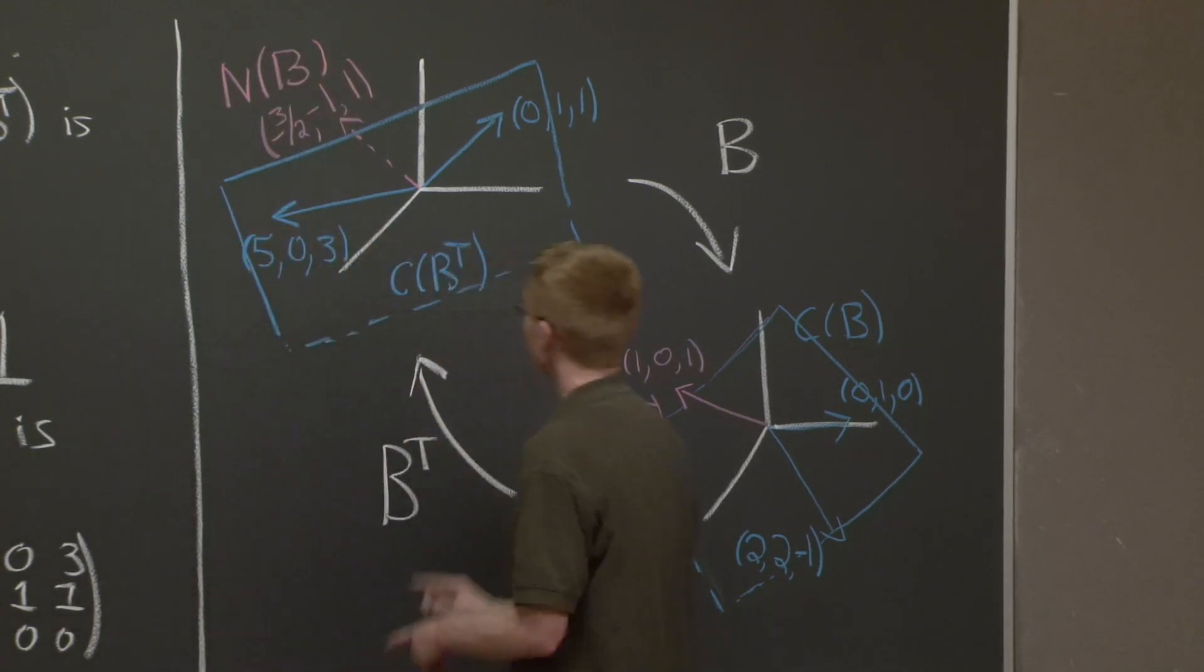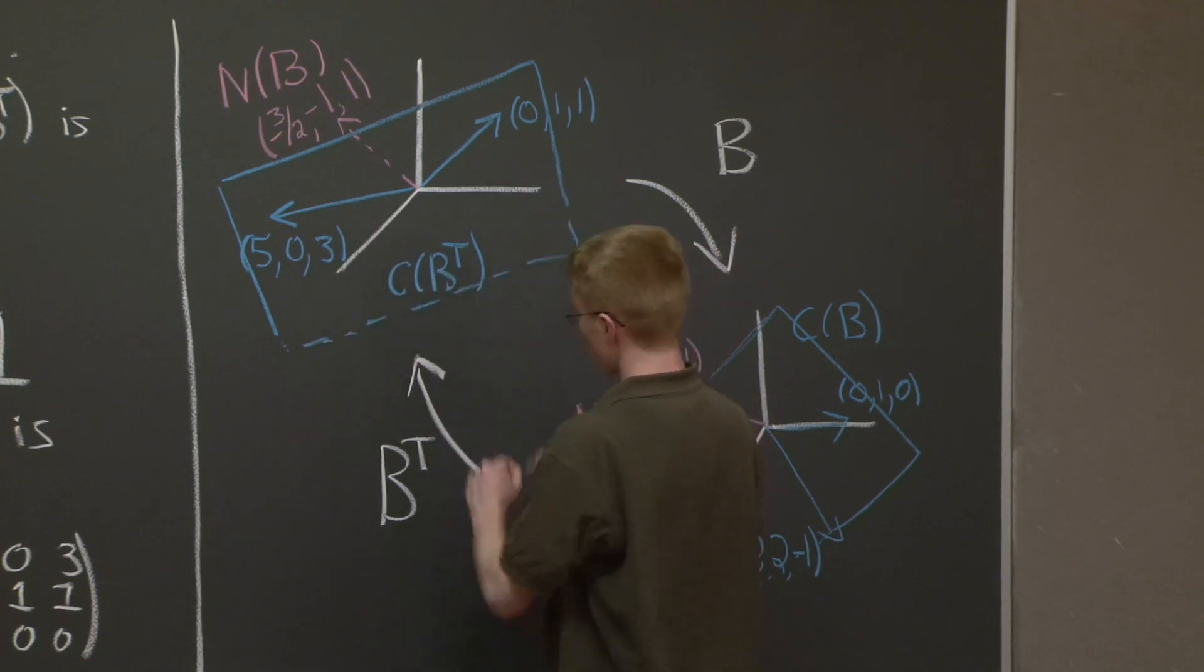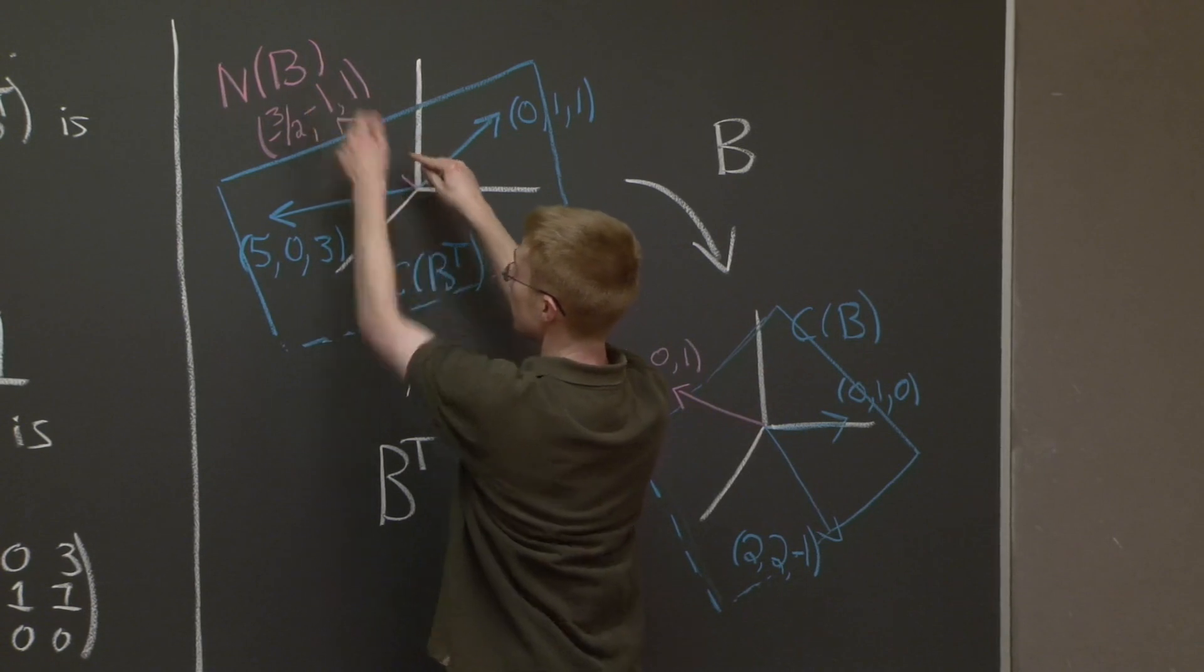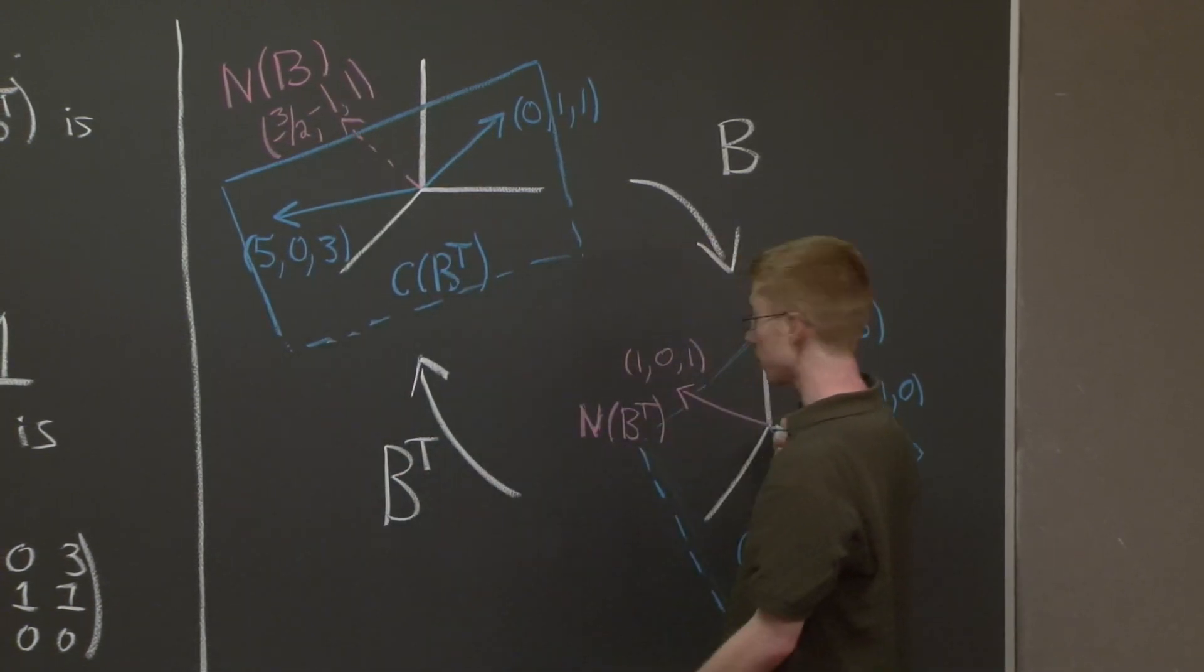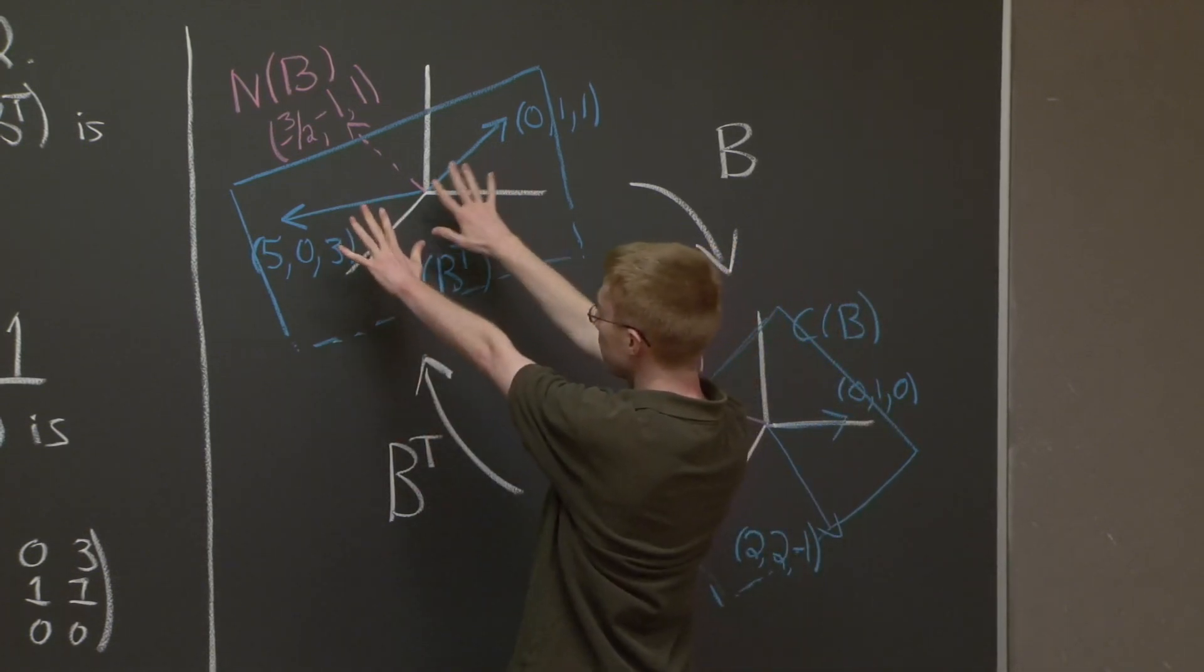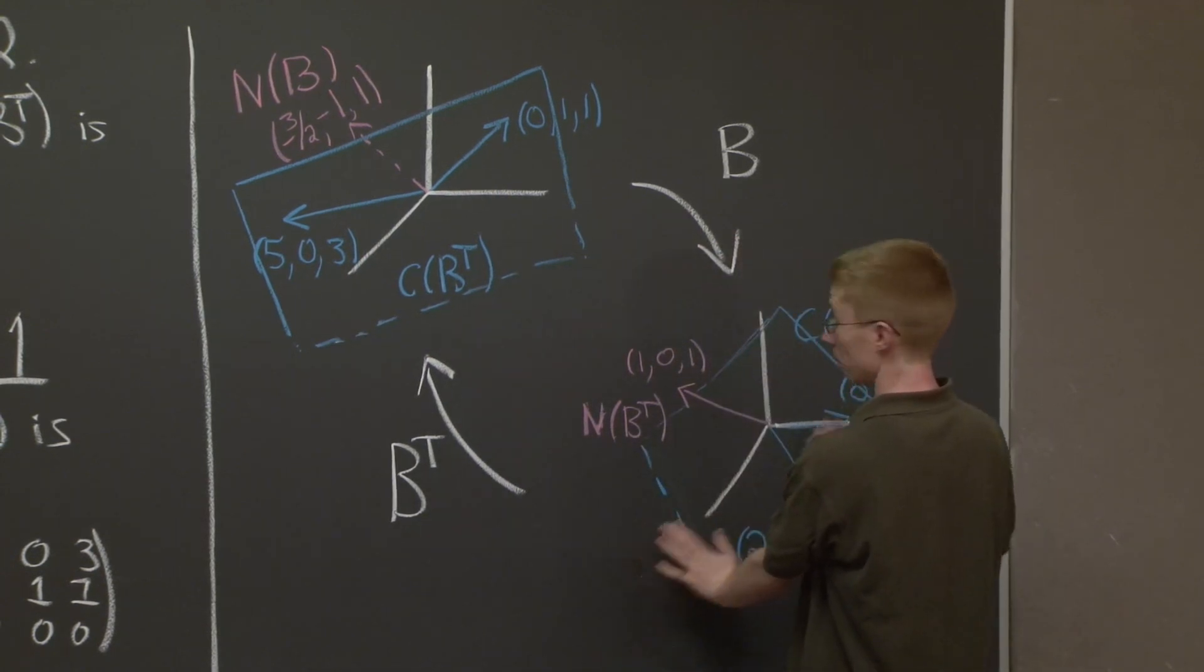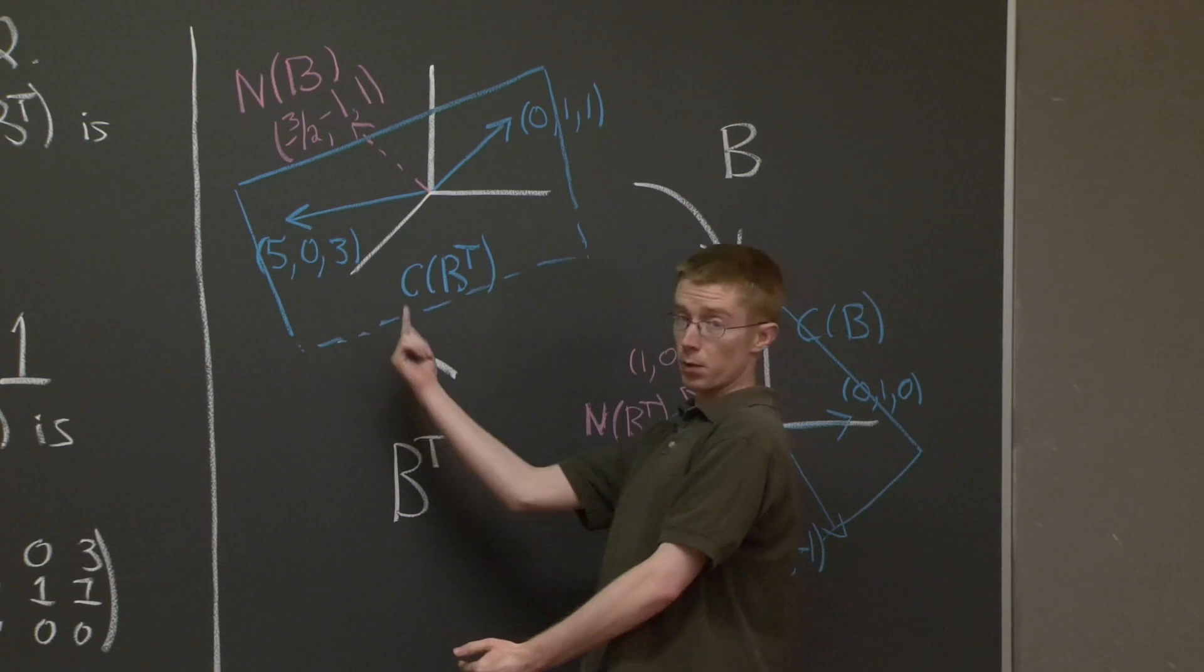So we have the row space here and the null space here. And so B maps this picture into this picture. The null space here, all the scalar multiples of this vector, all go to zero, because they're in the null space. That's exactly what B takes to zero. B takes everything else, including the row space, into this column space.